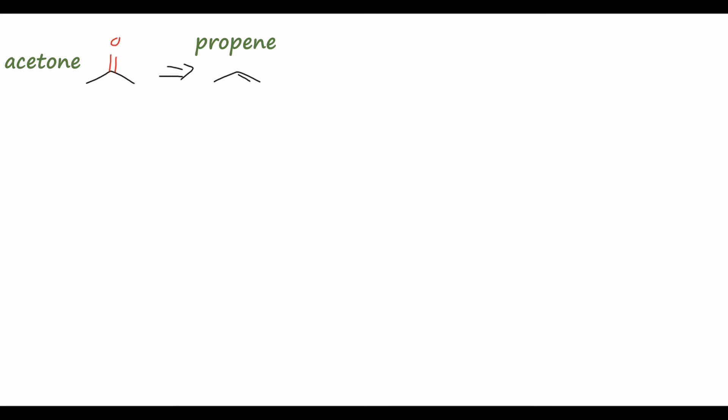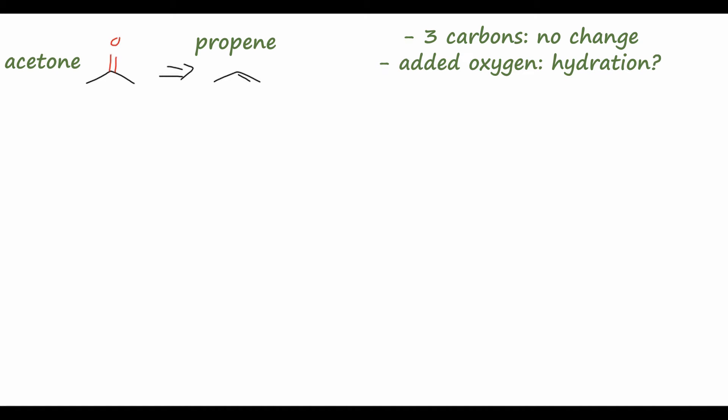As always with our retrosynthetic analyses, we can count the number of carbons in our starting material and final product. We can see that we have three carbons in each compound, so that doesn't change — we don't have to add or subtract any carbons. We have added oxygen in the product, so we have this carbonyl oxygen here, and we could think of doing a hydration reaction on the alkene.